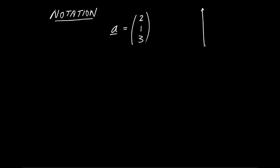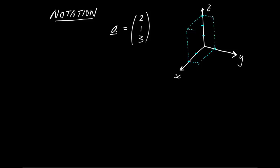If you haven't seen a vector specified before, think of the Cartesian axes — the x, y, z axes. Think about coming out from the origin two in the direction of x, one in the direction of y, and three in the direction of z. We think of our vector as an arrow from the origin to this point in space — the direction and length of that arrow is our visualization of the vector, with components 2, 1, 3.